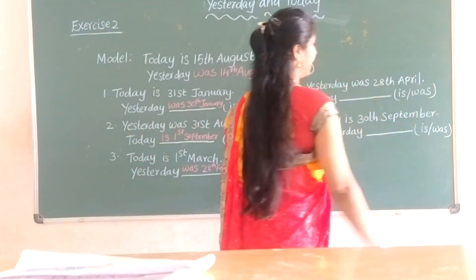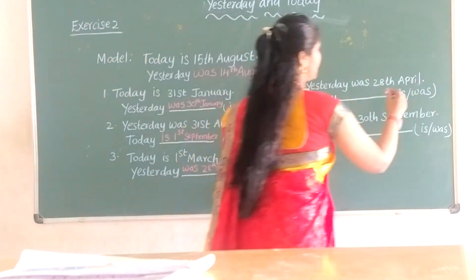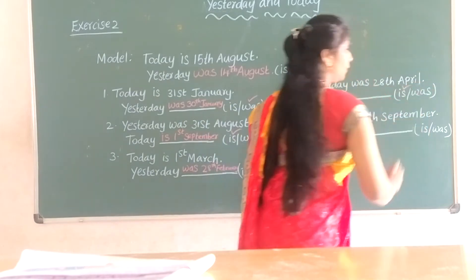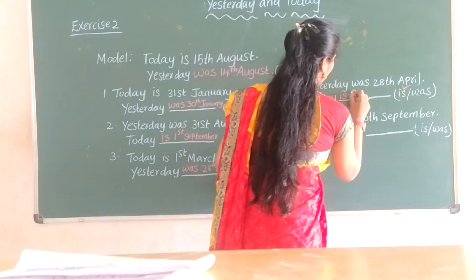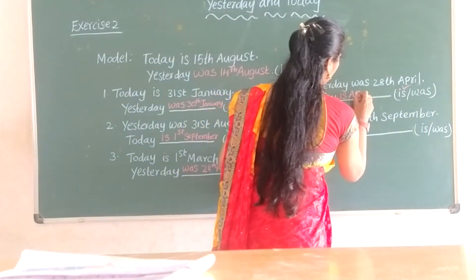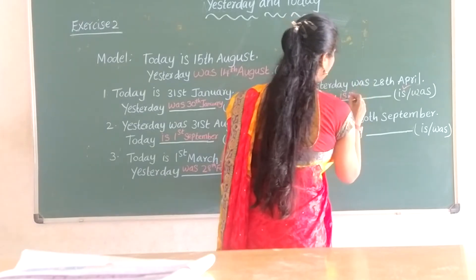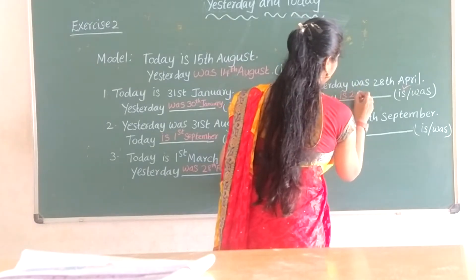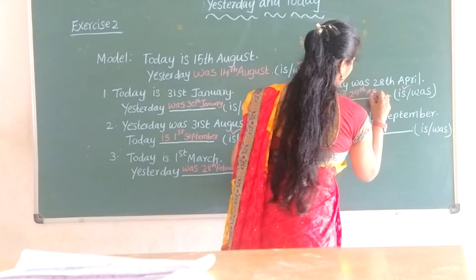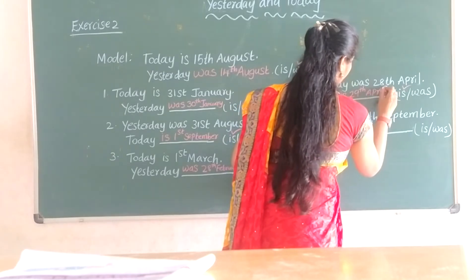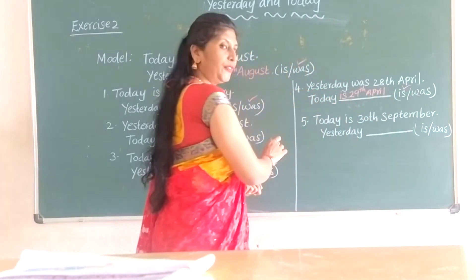Today means 'is'. Yesterday was 28th April, today is 29th April. Okay? Fifth one: Today is 30th September.